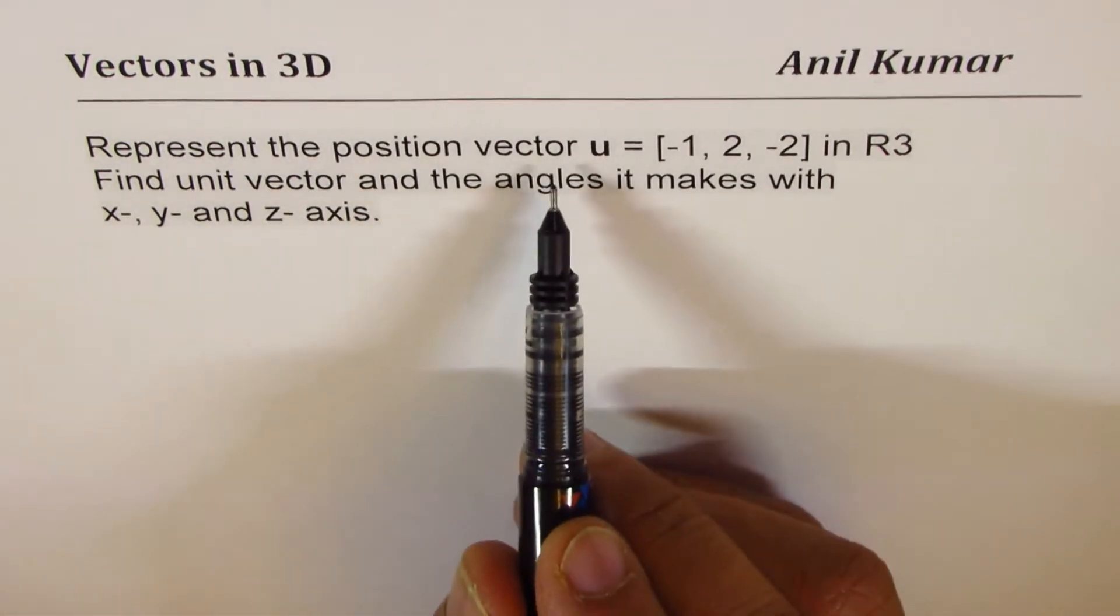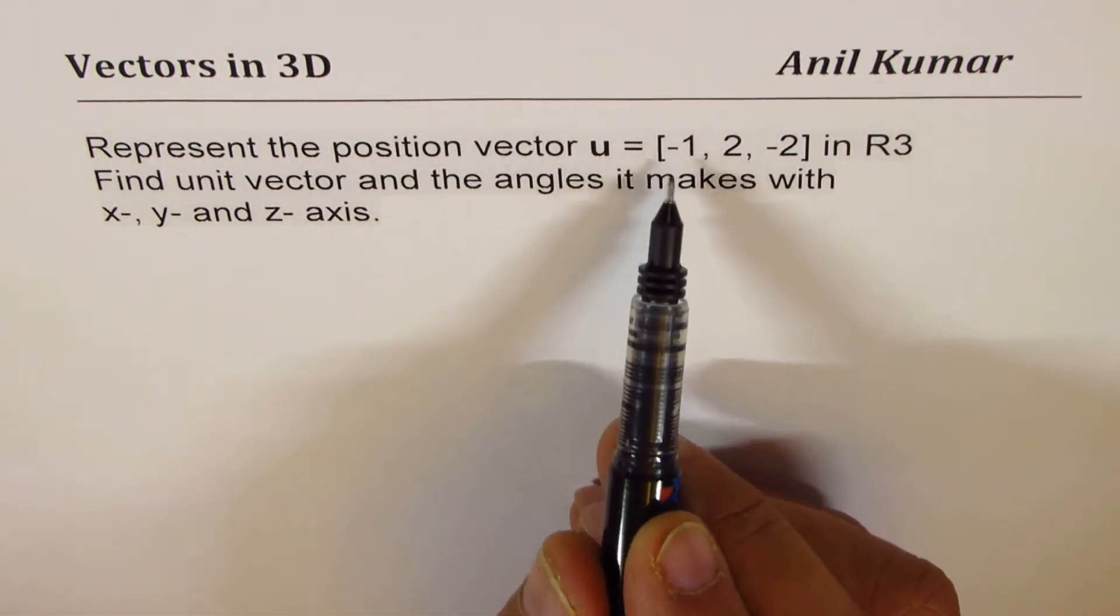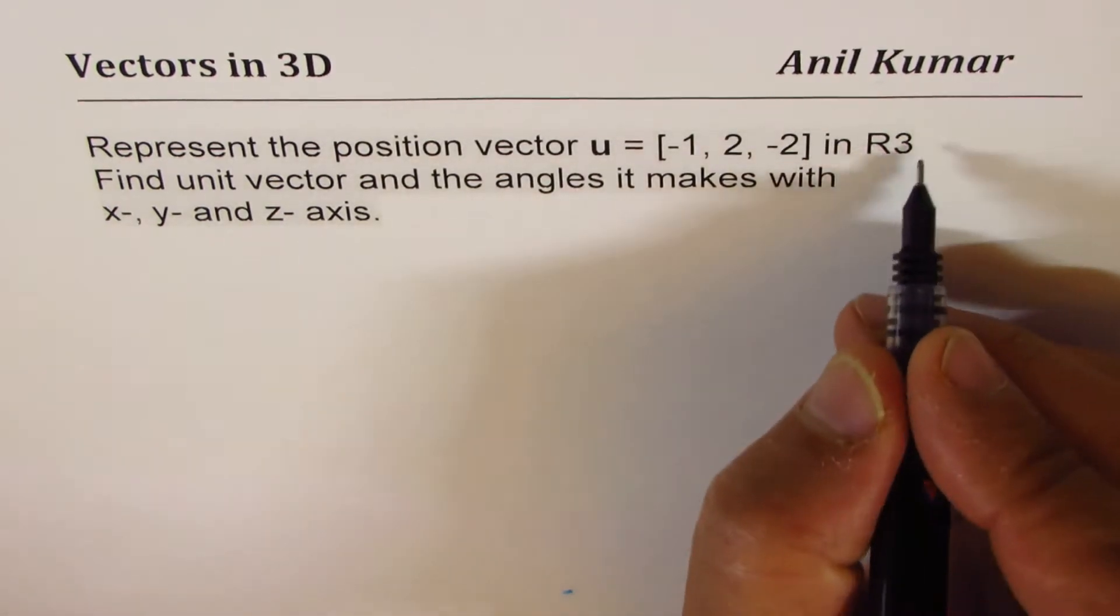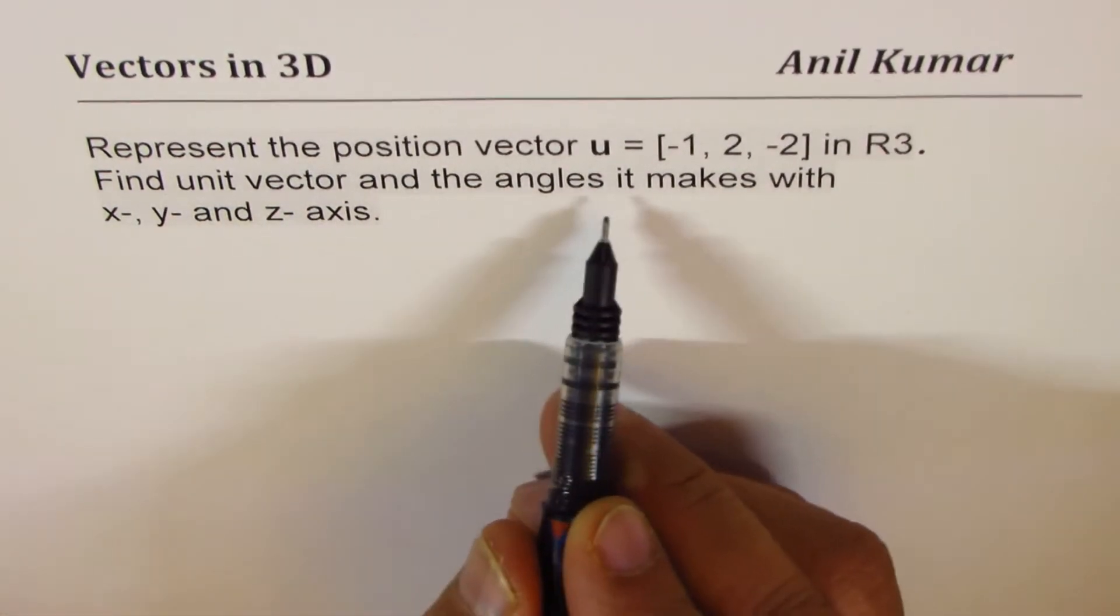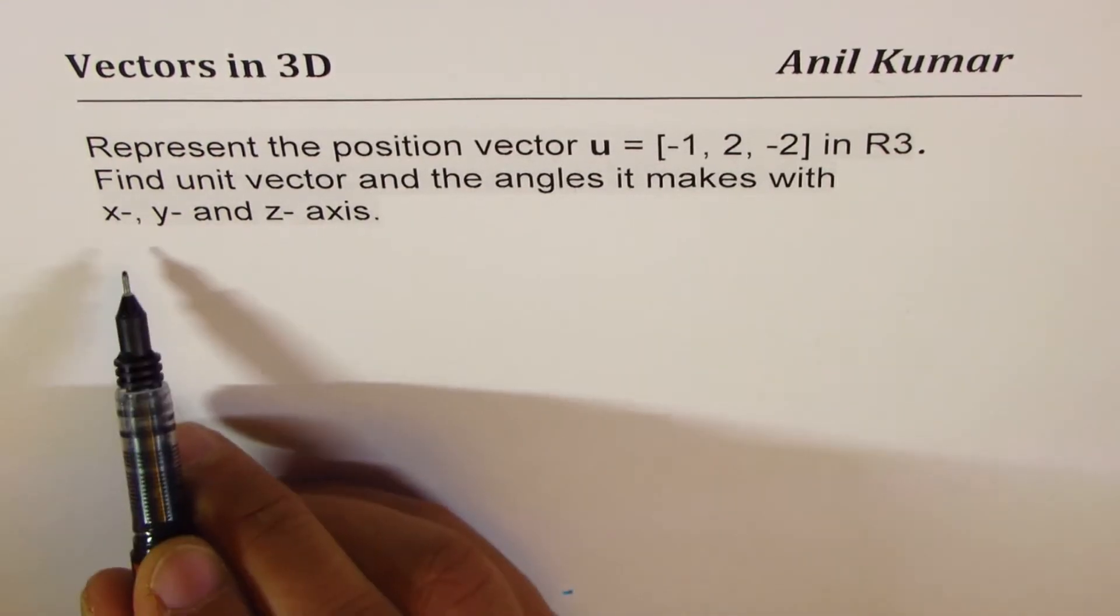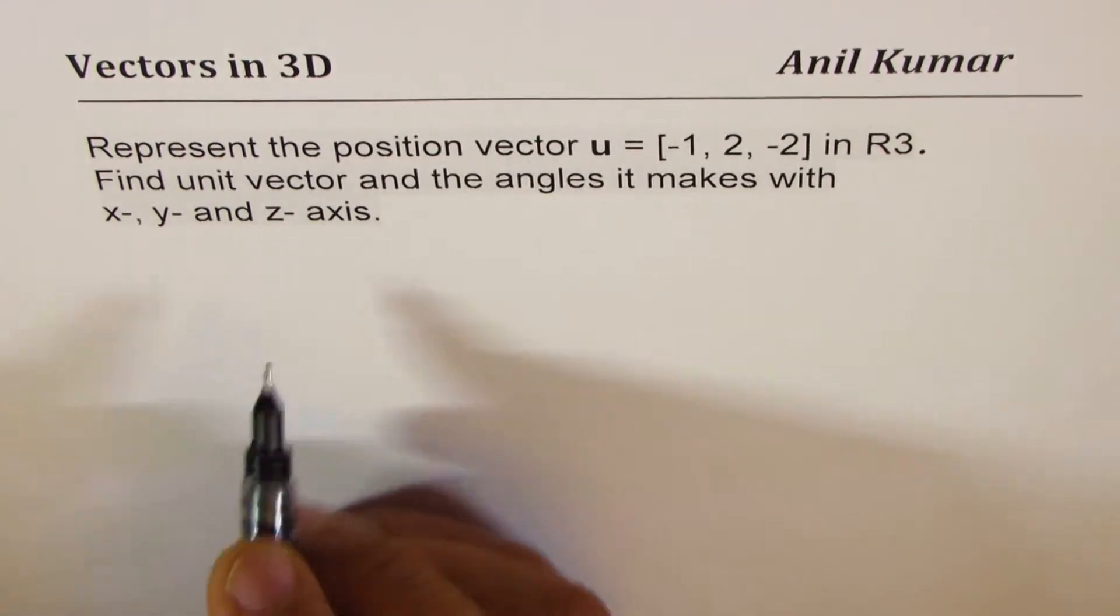Represent the position vector u = [-1, 2, -2] in R3. That's the first part. Find unit vector and the angles it makes with x, y and z axes.